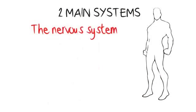Our body has two main systems controlling it: the nervous system and the hormone system.